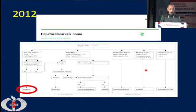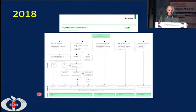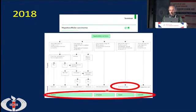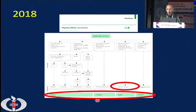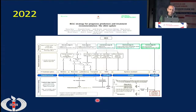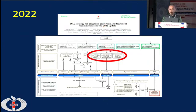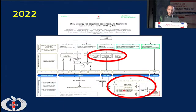In 2012, the next edition of BCLC staging came, where they introduced ablation as a form of treatment for early cancer. Instead of naming sorafenib specifically, because by that time many more drugs had come, they started saying systemic therapy for advanced stage C. They also introduced the concept of prognosis and survival in that algorithm. The latest edition came in 2022, where they subdivided the intermediate stage into three groups and introduced a long line of drugs for systemic therapy — first line, second line, and third line.